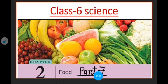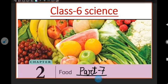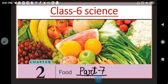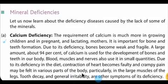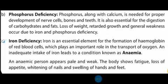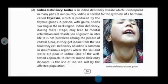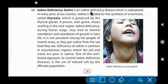Good morning students, hope all are fine and safe at home. Welcome to our video. Today we are going to continue chapter number two, that is Food. In my previous video we discussed mineral deficiency — calcium deficiency, phosphorus deficiency, and iron deficiency. Now in today's video we are going to discuss iodine deficiency. Goiter is an iodine deficiency disease.